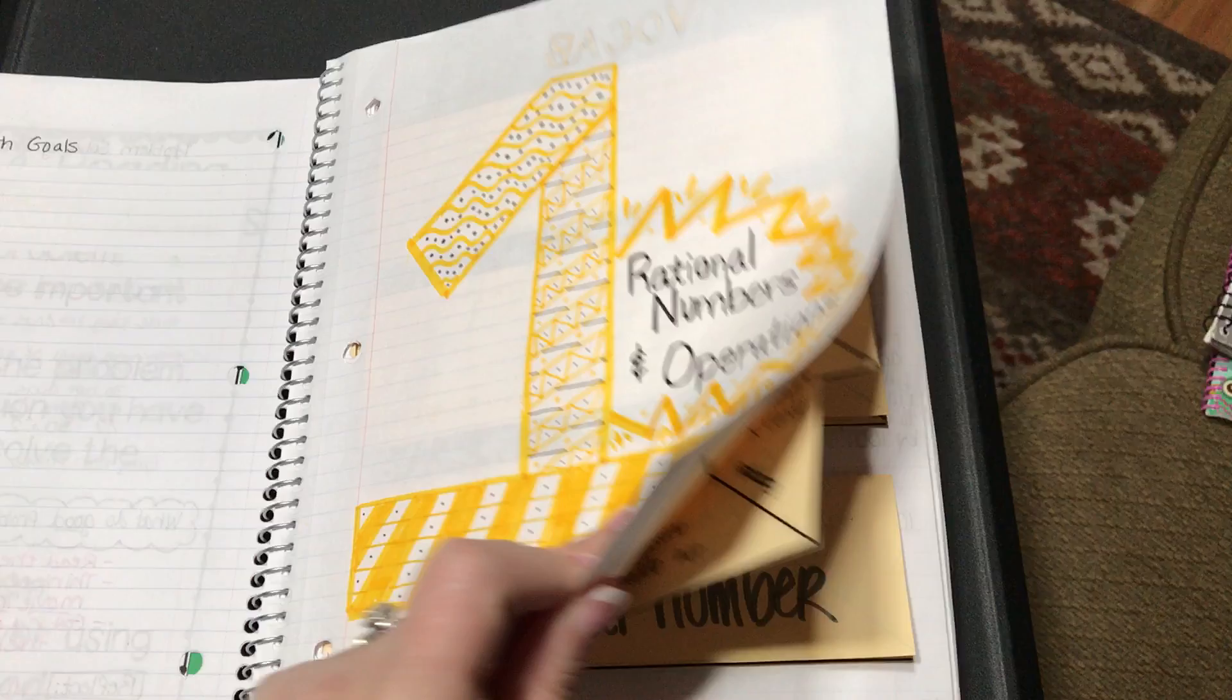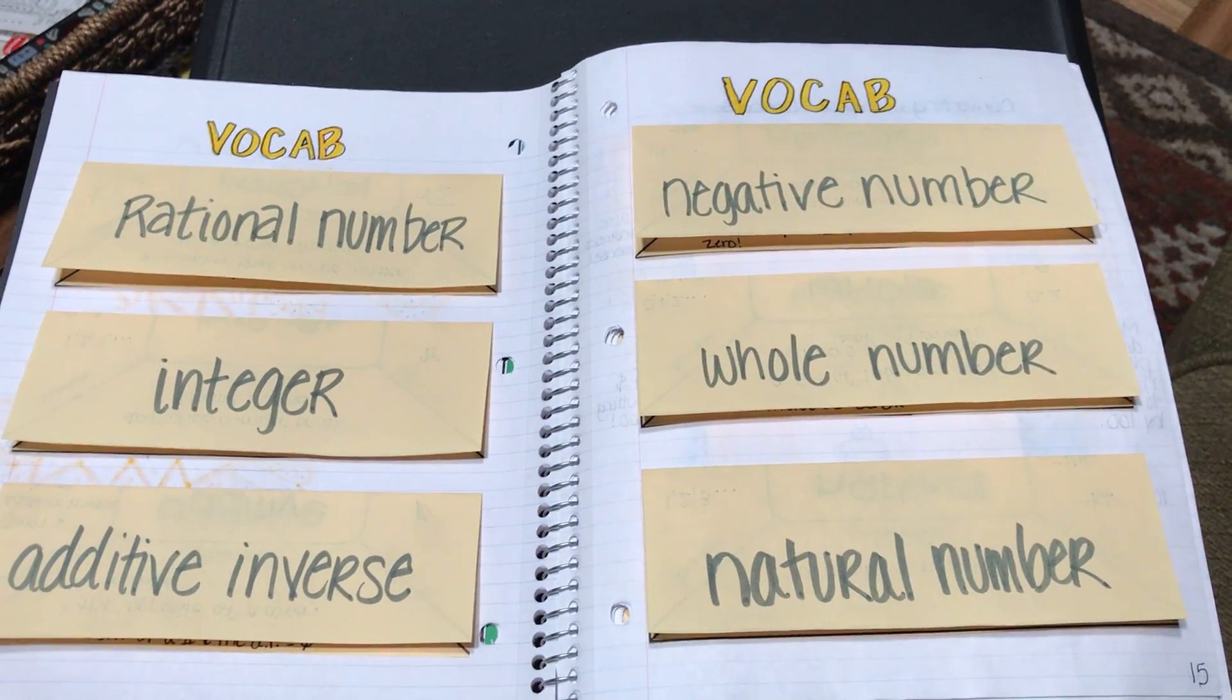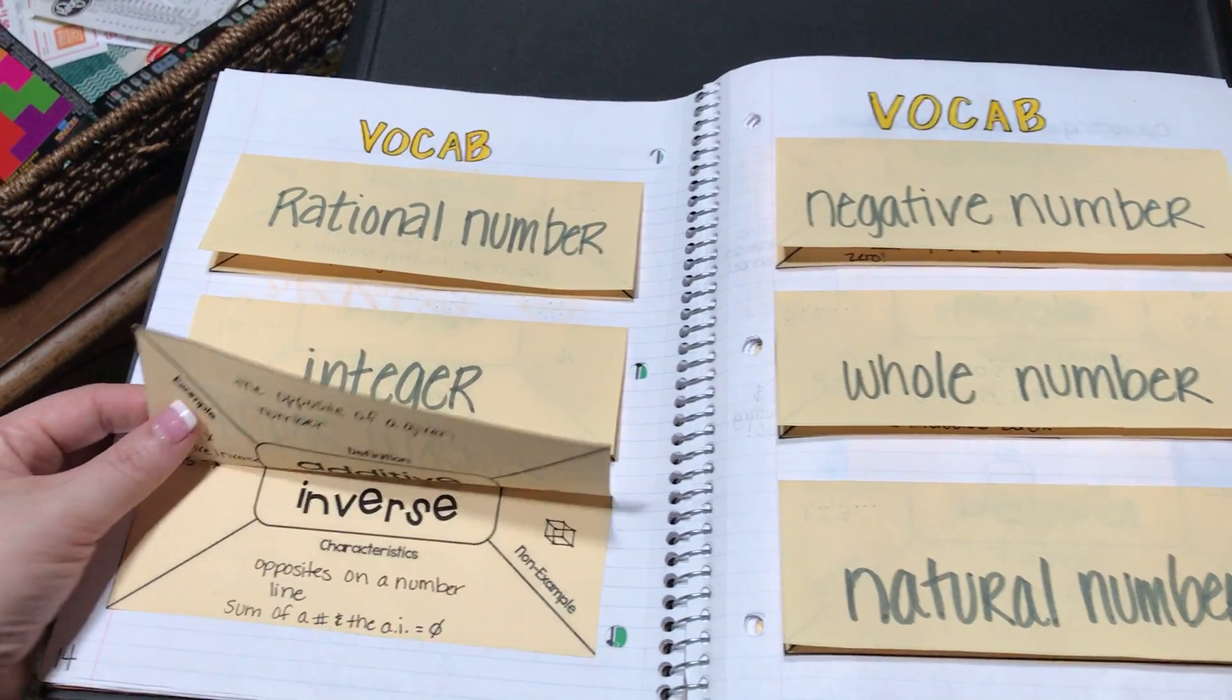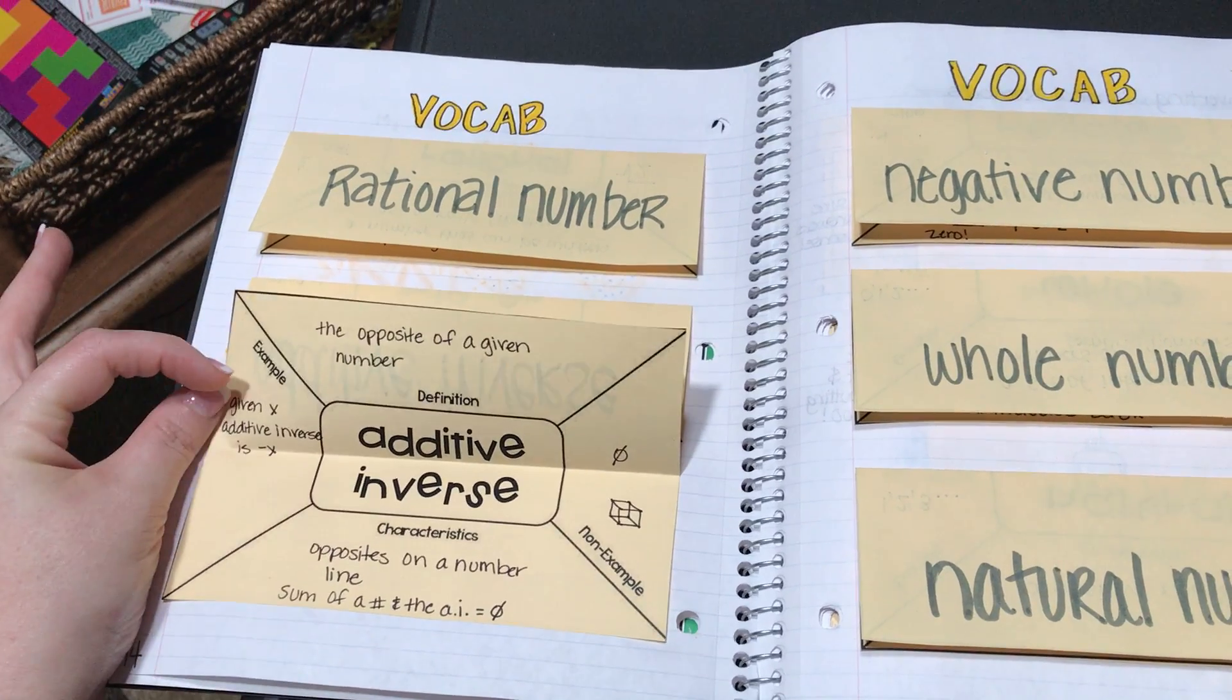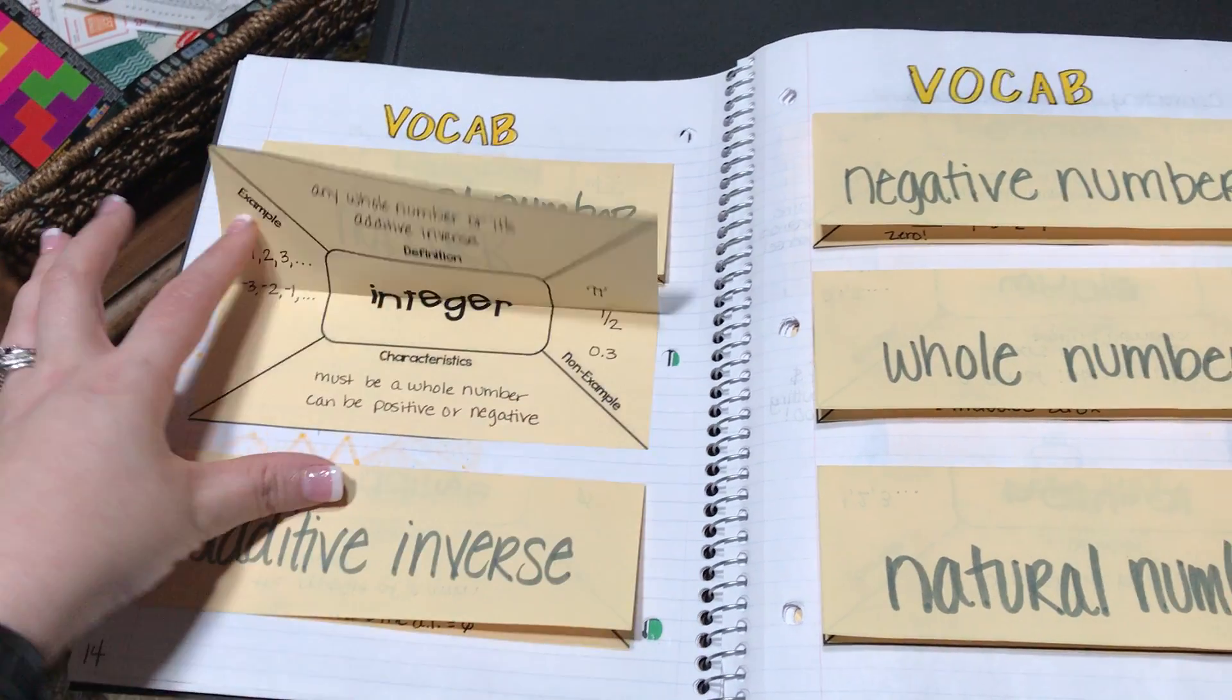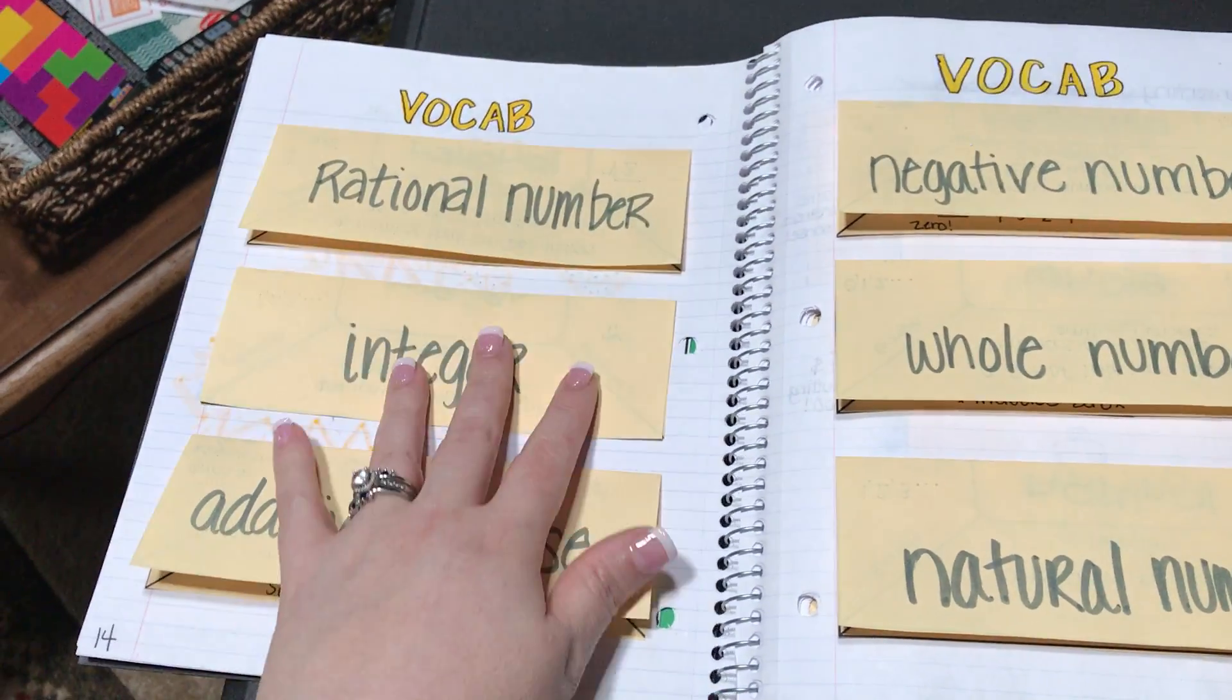The next two pages in each unit are where I do the Frayer models for the interactive notebook for that unit. Under each flap is the completed Frayer model with the definition, characteristics, example, and non-example. I make sure that my students use mathematical non-examples and not just random non-examples.